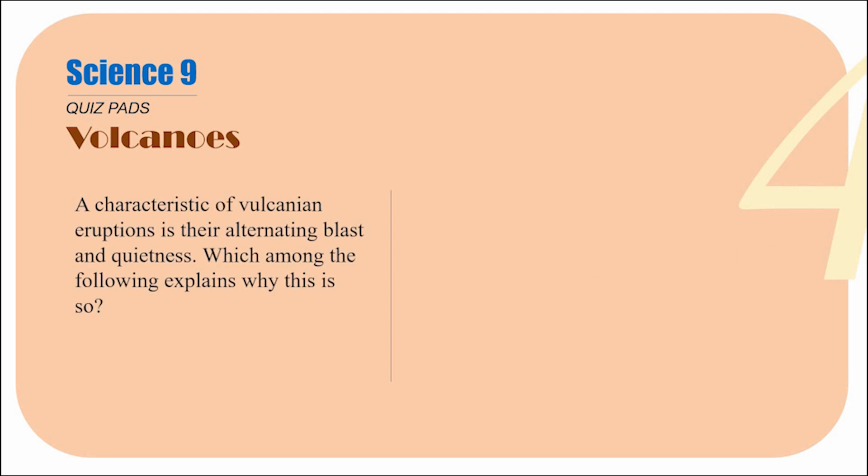Question number four: a characteristic of volcanic eruptions is their alternating blast and quietness. Which among the following explains why this is so? Remember when we discussed the types of volcanic eruptions — we really emphasized this alternating blast and quietness. In some classes we even counted it out. Recall those moments when we explained in class why a volcanic eruption — like Vulcanian type — does that random alternation.